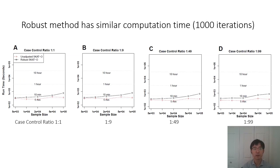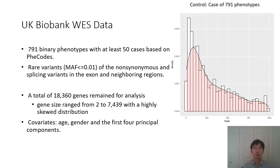We further compared computation time between robust methods and unadjusted methods. We found that robust SKAT-O has very similar computation time as unadjusted SKAT-O in all situations, regardless of sample size and case-control ratio, which means our new robust method is scalable for large data analysis.